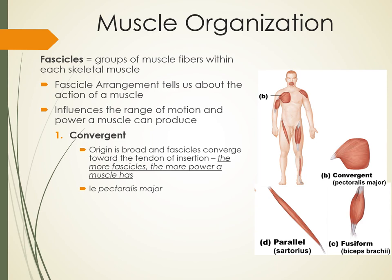We have a few different fascicle arrangements. The first type is called convergent — that's item B in the pictures. It's a very broad fascicle arrangement, kind of like a fan fanned out from a point of origin. When you have this broad fan, you actually get a lot of fascicles, and the more fascicles you have, the more power you have in that muscle. An example of this is the pectoralis major, which is a very strong, convergent muscle.